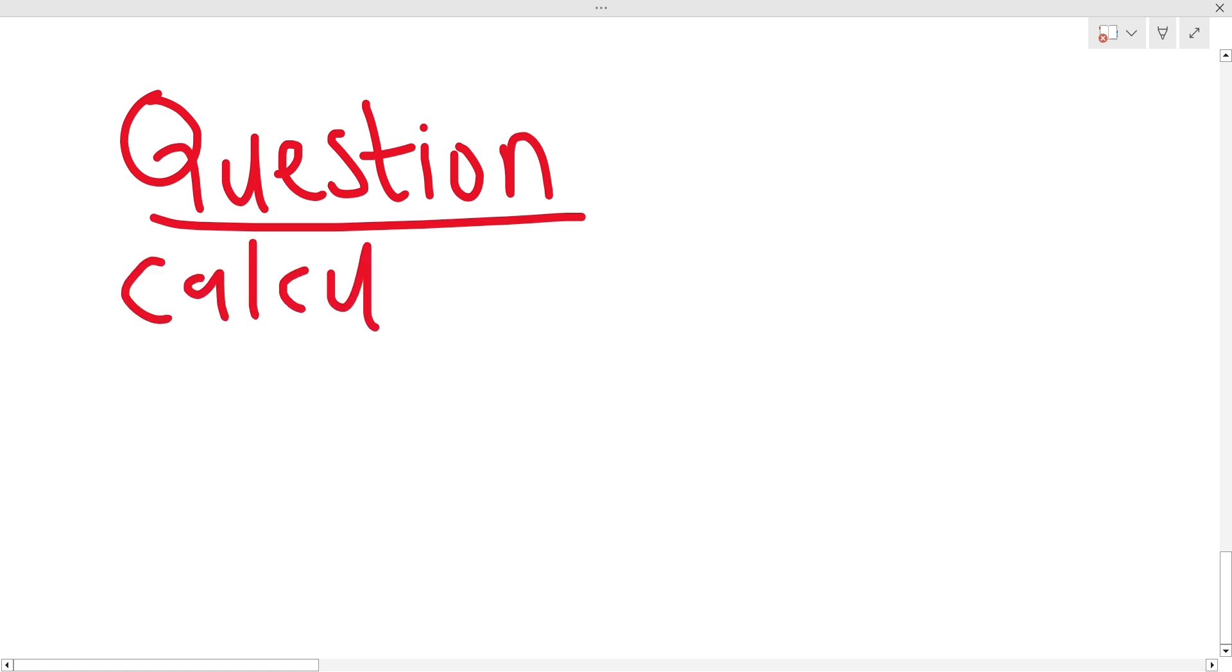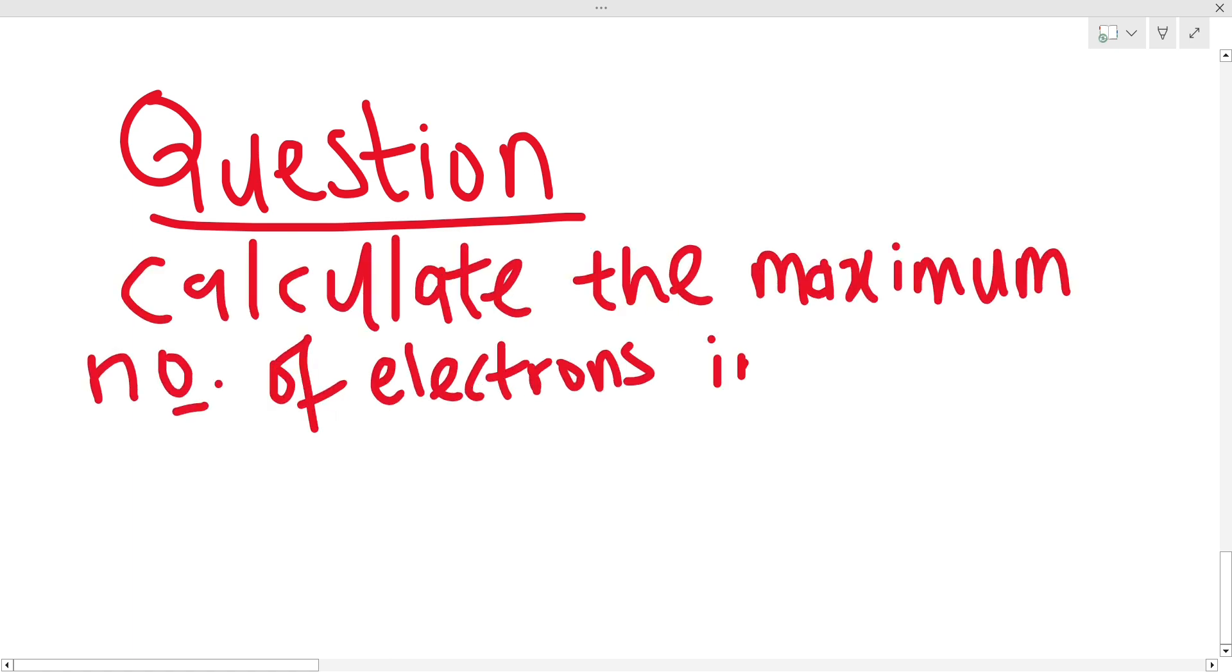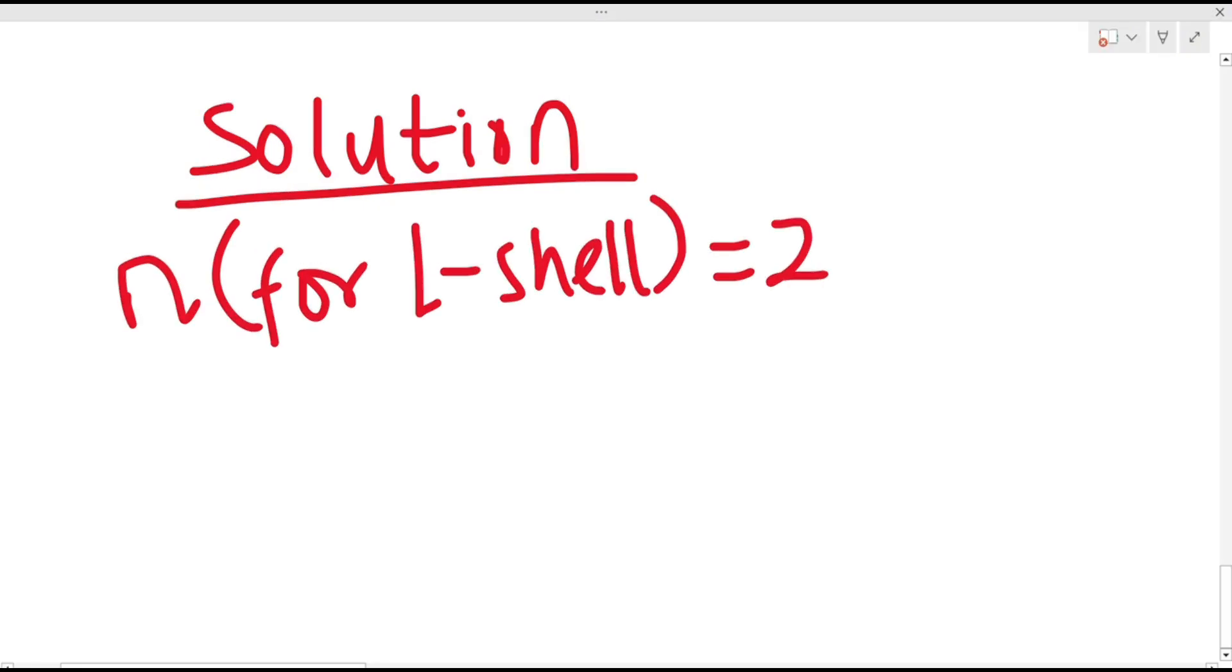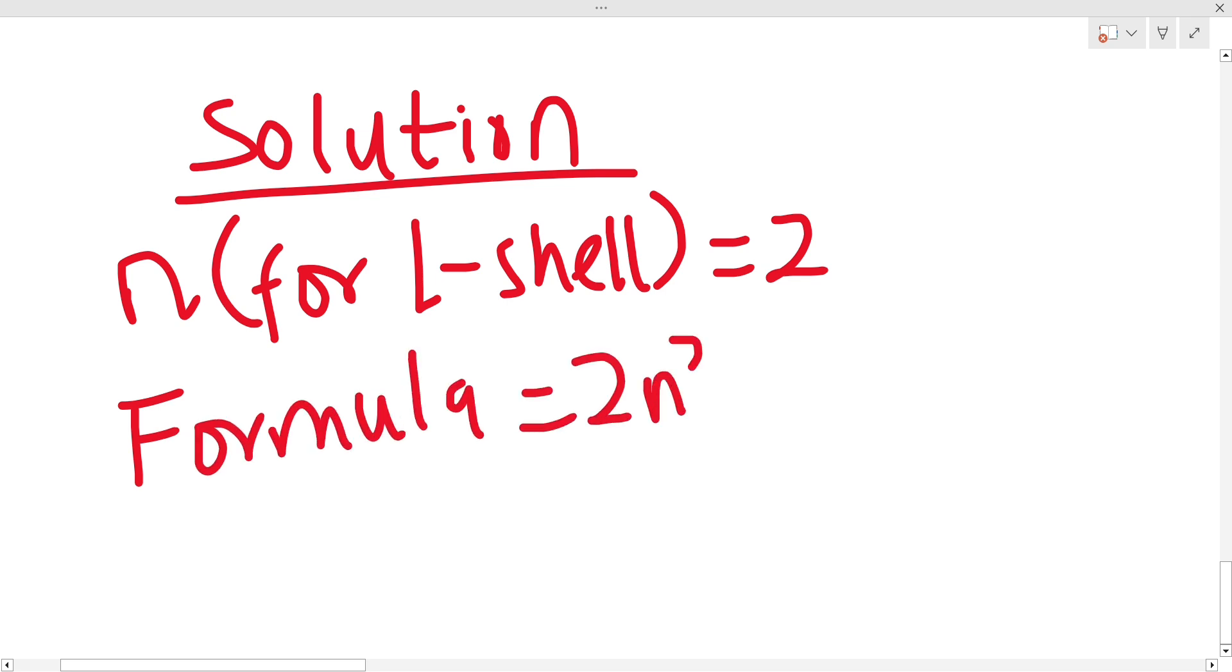Calculate the maximum possible number of electrons in the L shell. From my previous video, we discussed that the L shell is the second shell in an atom and the principal quantum number denoted by n will be equal to 2. So using the formula 2n², we have 2 into brackets 2 squared which is equal to 8.